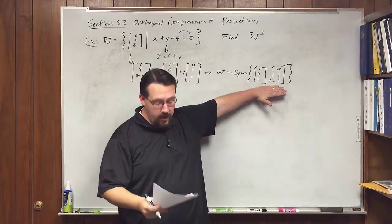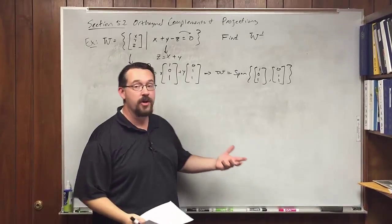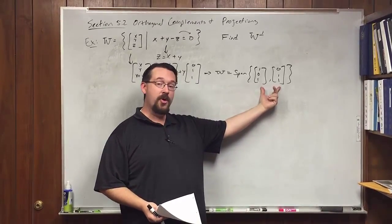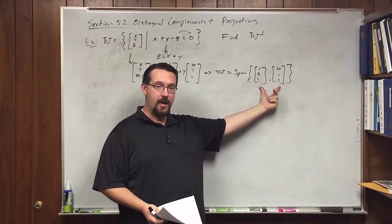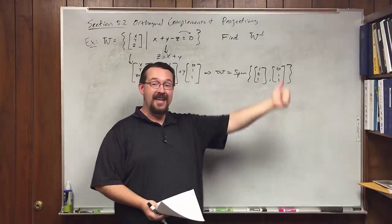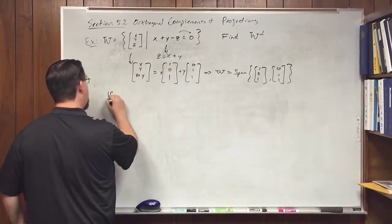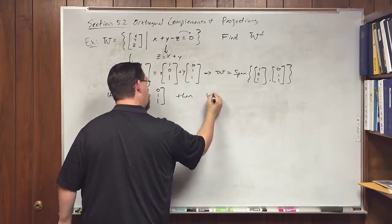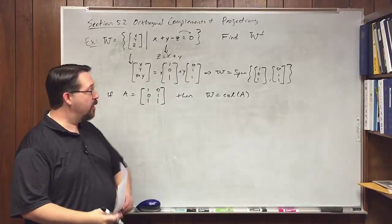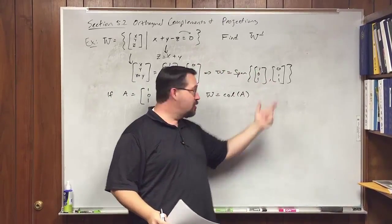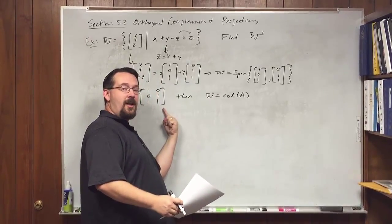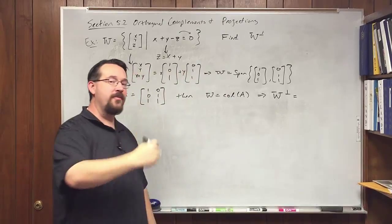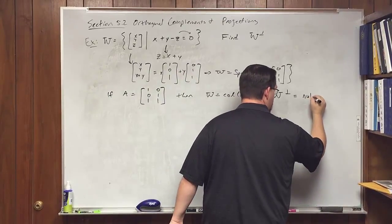Knowing these vectors is a very key step. To find the orthogonal complement of W, put those vectors into a matrix as columns — they form a matrix whose column space is W. So if A is the matrix with columns (1,0,1) and (0,1,1), then W is the column space of A. By Theorem 5.10, W complement is simply the null space of A transpose.